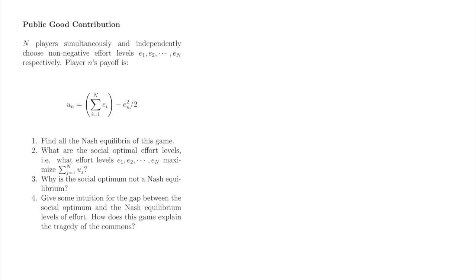We'll find the Nash equilibria of this game and the socially optimal effort levels of this game. We'll explain why the social optimum and the Nash equilibrium effort levels are different, and then discuss why markets routinely under-provide public goods.